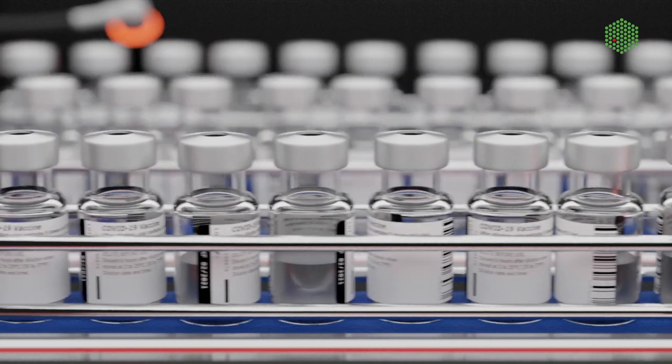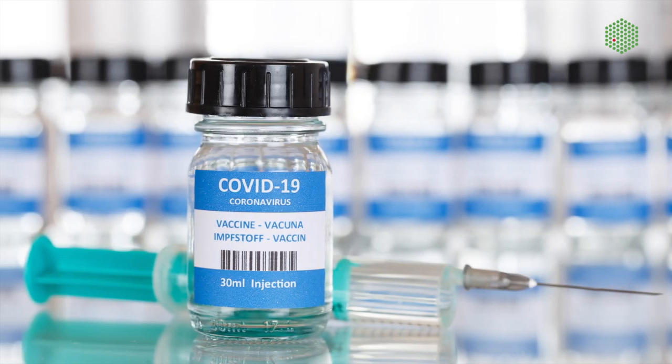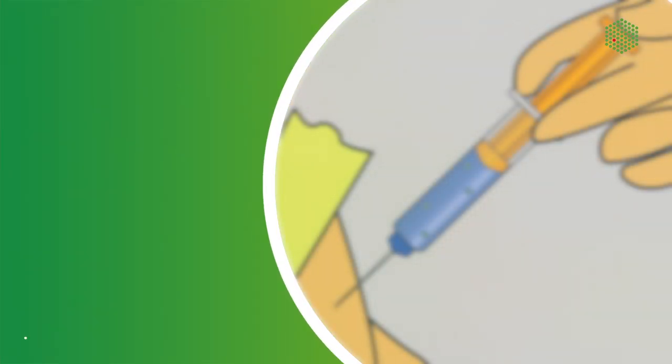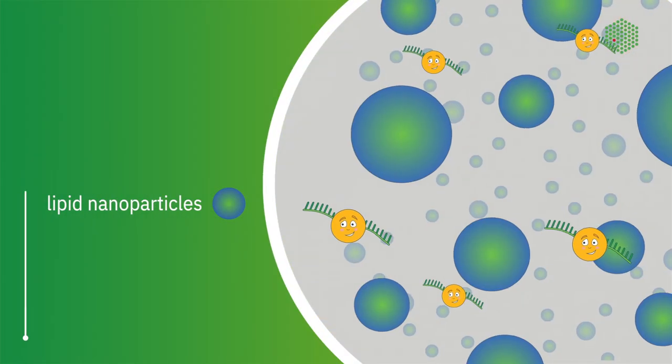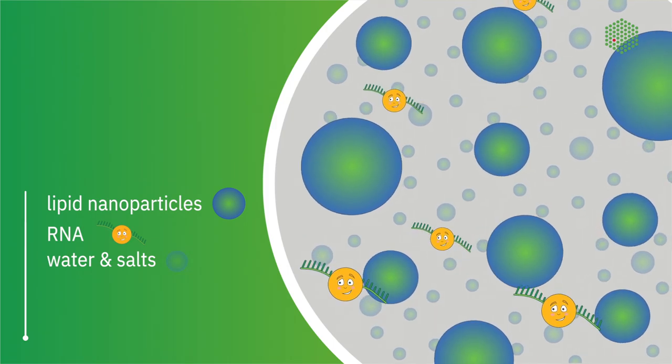The beauty of the RNA vaccines such as the ones for COVID-19 is their simplicity. Their composition includes just tiny droplets of fat called lipid nanoparticles, the RNA we put inside them, water and some salts.